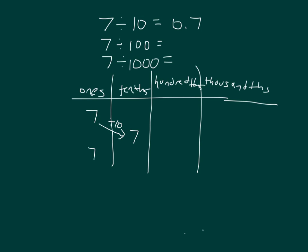7, when we divide it by a hundred, it becomes hundredths, or 7 hundredths in particular. We write 7 hundredths as 0.07.